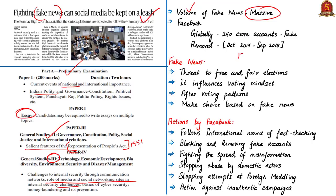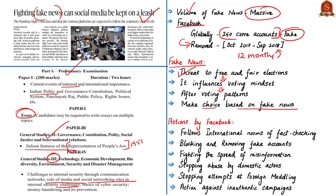During the period of 12 months from October 2017 to September 2018, Facebook identified 250 crore accounts globally as fake accounts and has removed them. The issue of fake news is a threat to free and fair elections as it influences the voting mindset and alters voting patterns—there is a danger of people making their choice based on fake news rather than reliable and authentic information. Access to reliable information is a component of free and fair elections, which is the foundation of democracy.